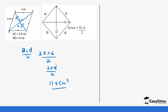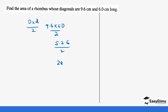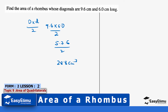Finally, find the area of a rhombus whose diagonals are 9.6 and 6.6. Using the formula D × d ÷ 2: 9.6 × 6.6 = 63.36 — wait, 9.6 × 6.0 gives 57.6, divided by 2 gives 28.8 centimeters squared.